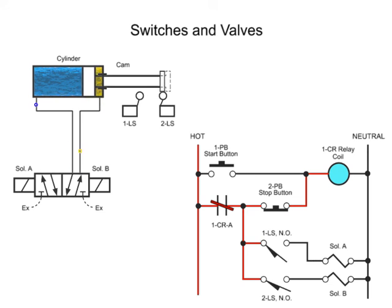When the stop button is pressed, the relay coil becomes de-energized and relay contacts 1CRA open, disconnecting the circuit. This removes current from the entire circuit and de-energizes both solenoids.